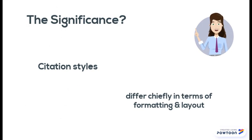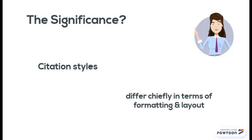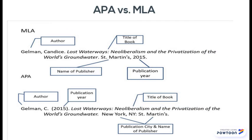So what's the significance of all this? Simply that citation styles differ chiefly in terms of formatting and layout. You'll need to provide nearly all the same pieces of information to cite the same source, no matter which style you're using. So don't stress trying to memorize each style — use a style guide instead to help you format your paper and answer all your "how do I cite this source" type of questions.